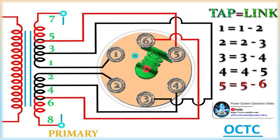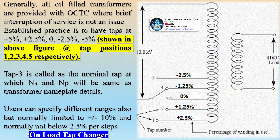There are two types of tap changers based on operation mode: on-load tap changer (continuity of supply maintained) and off-load tap changer (supply interruption during change). The basic principle is expressed as: Vs/Vp = Ns/Np (turns ratio), or Vs = (Ns/Np) × Vp. In this equation, Vs is the quantity that needs to be controlled. To achieve this, we can control any of Ns, Np, or Vp.